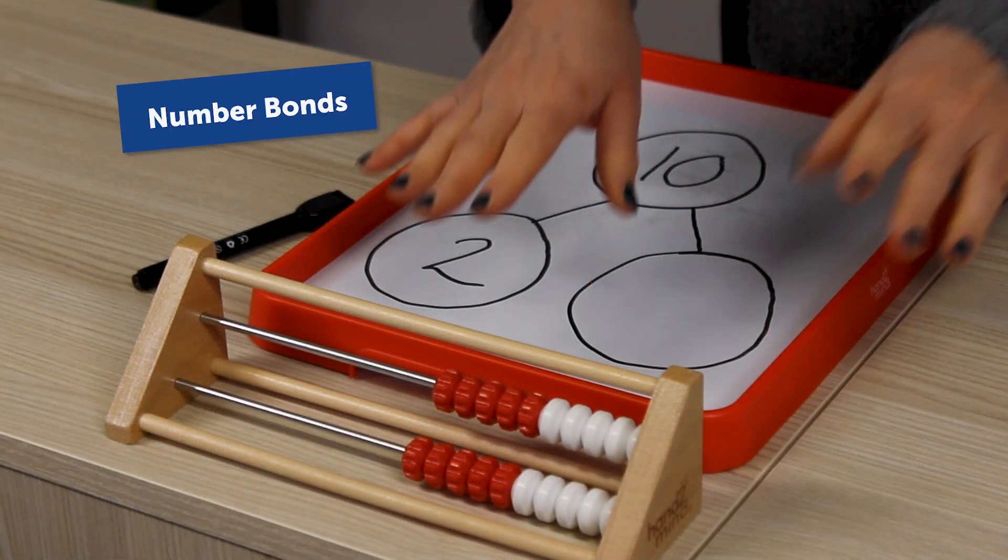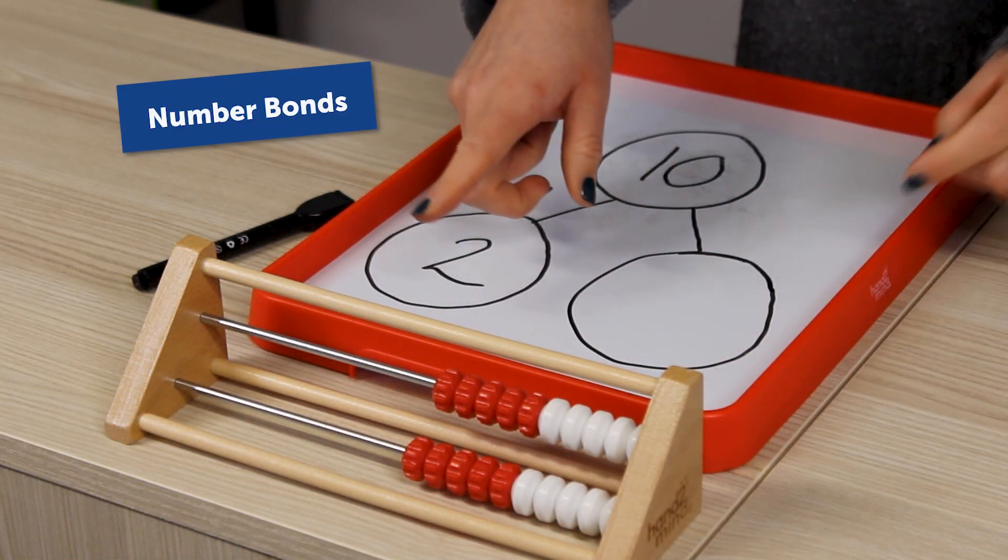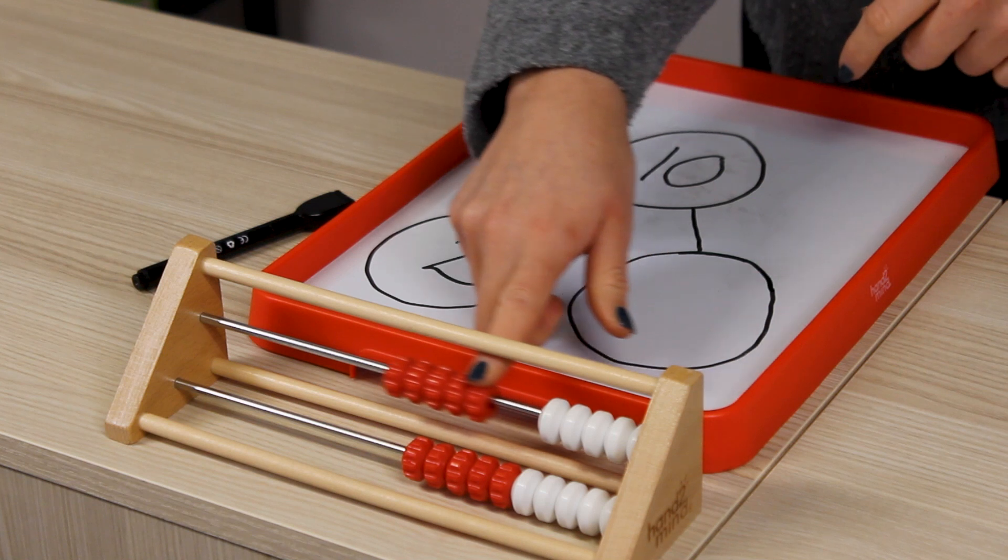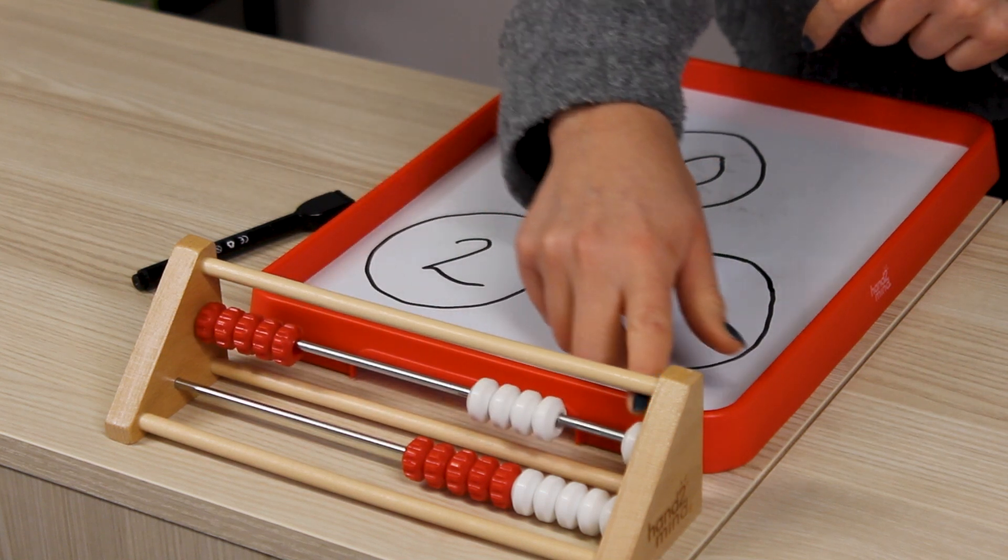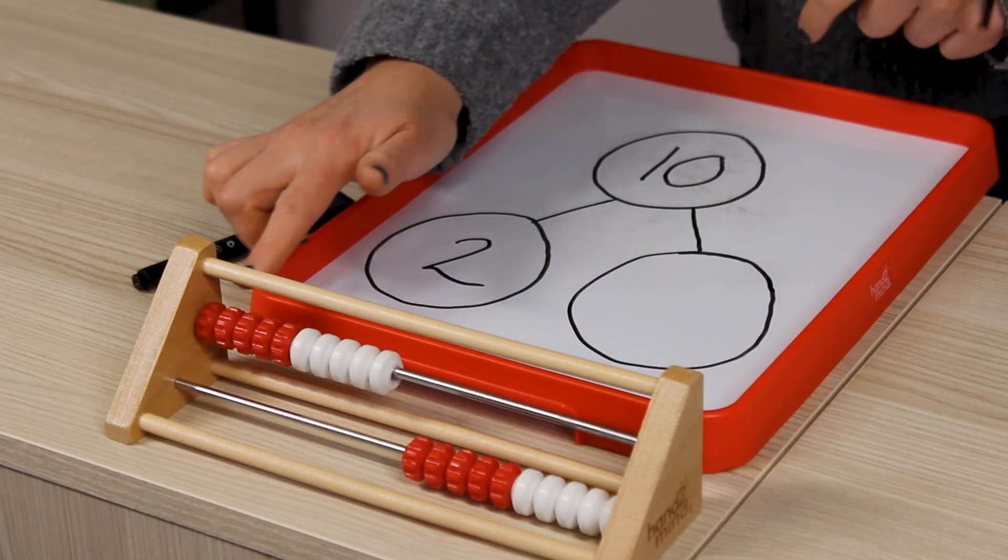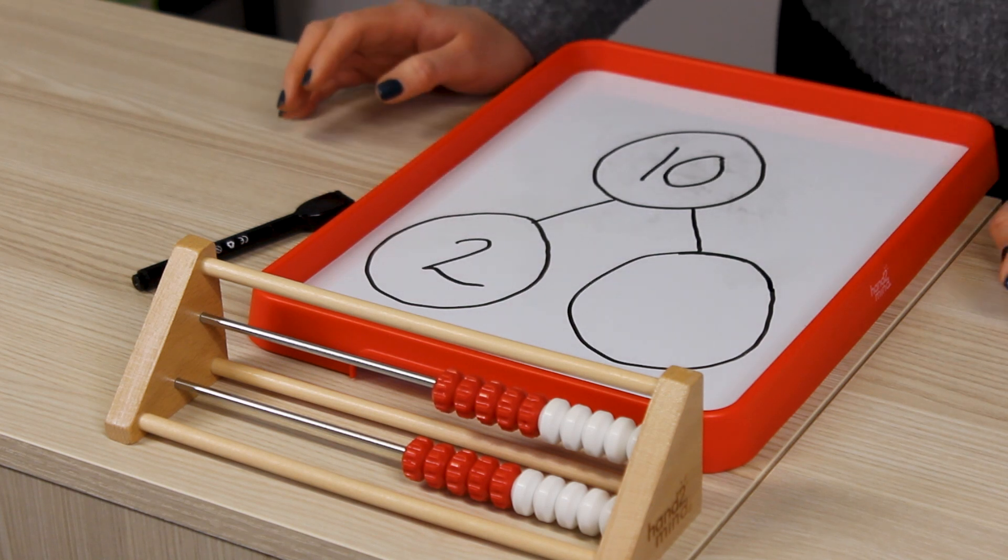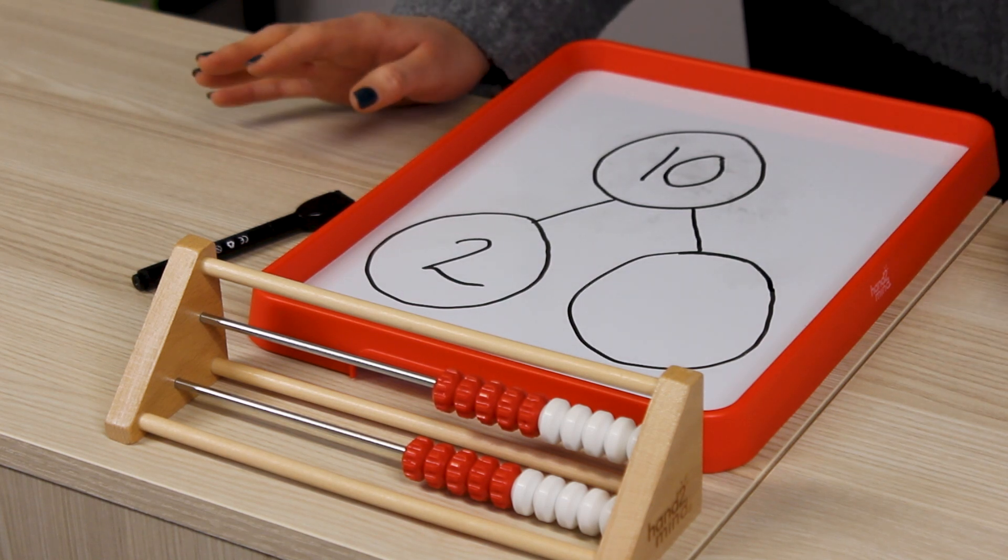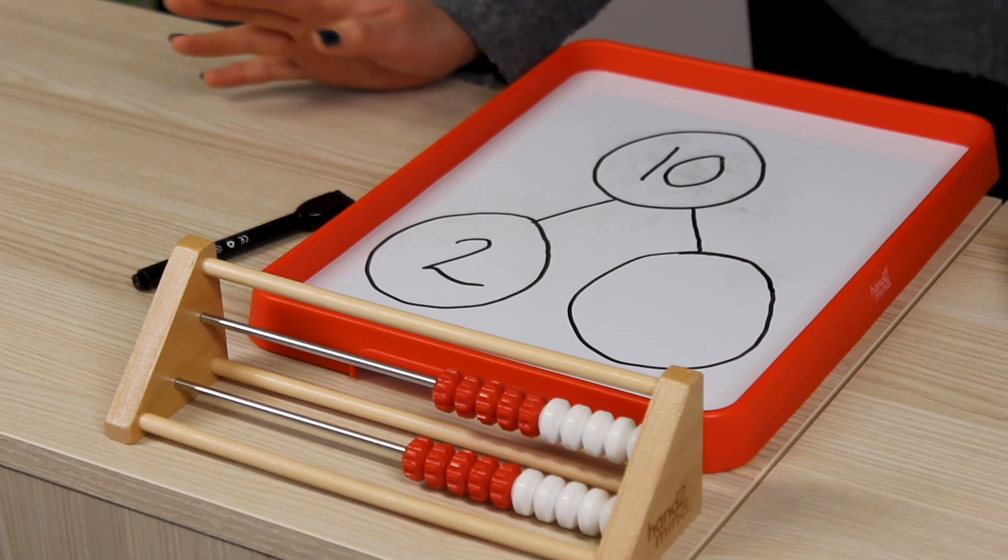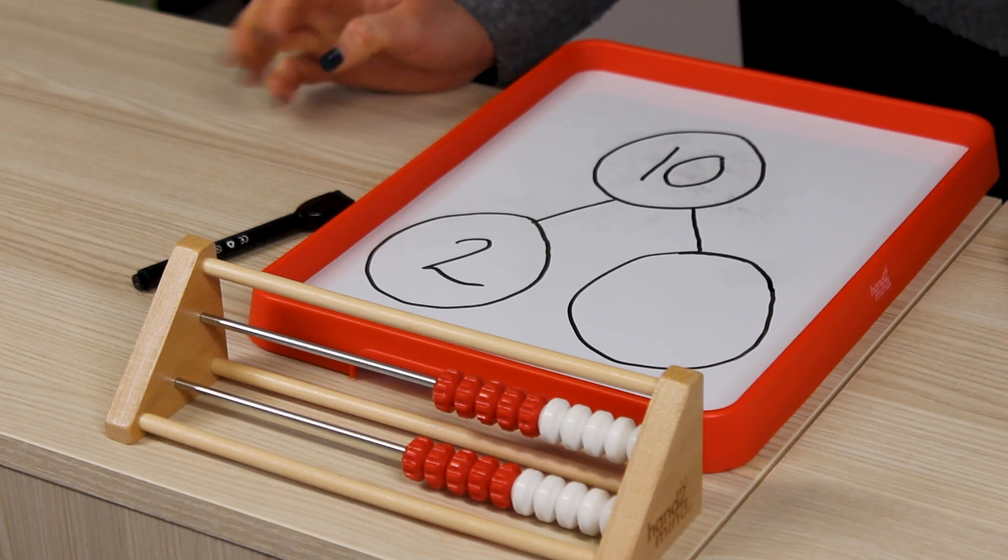So in year one children are going to have now a good understanding of subitizing into five and they know that we've got our five and five which makes ten so now we're going to do lots of exploration with our number bonds to make ten. So we can pose questions such as if I had two how many more am I going to get to ten.